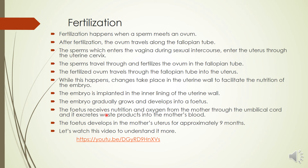The fetus receives nutrition and oxygen from the mother through the umbilical cord, and it excretes waste products into the mother's blood. The fetus develops in the mother's uterus for approximately 9 months. Now let's watch another video which will help you understand fertilization more.